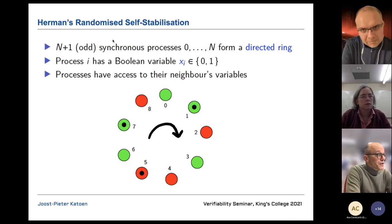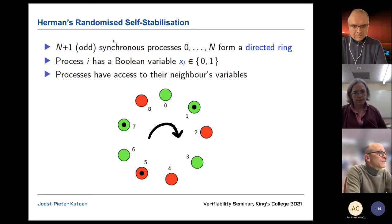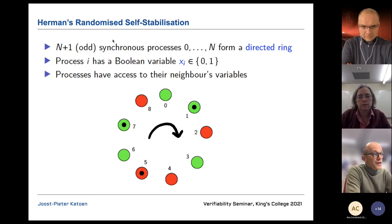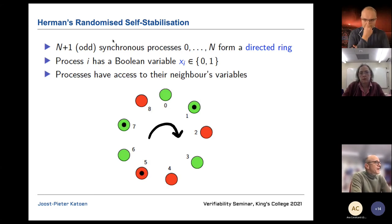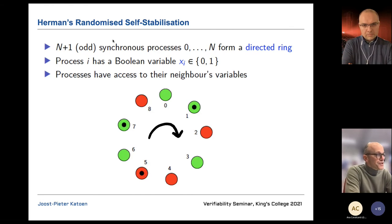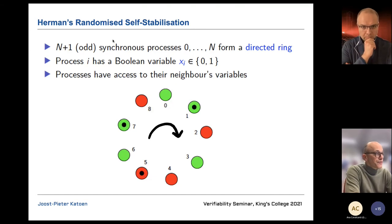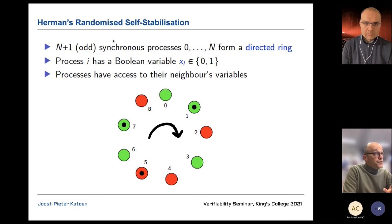The distributed system we consider is a ring of processes — circles in the picture — with an odd number of nodes, forming a unidirectional ring where messages are sent clockwise. Every process has a Boolean variable (green as zero, red as one). Processes have access to their left neighbor's value. There is a special token: a process has a token if it has the same color as its left neighbor. For example, seven has a token because six is also green.